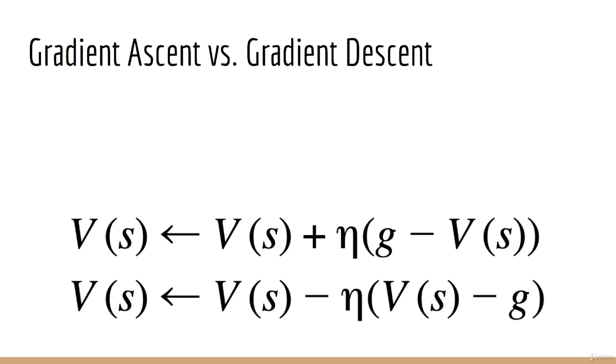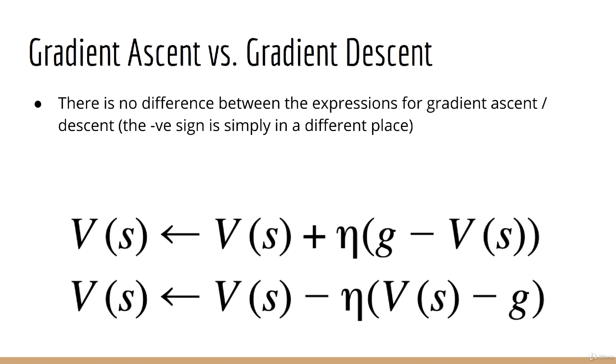As a side note, I want to mention that there is ultimately no difference whether we call what we are doing gradient ascent or gradient descent. Because there's a plus sign here, you might think of it as gradient ascent. The plus sign is natural to use if you derive this expression from the sample mean update.